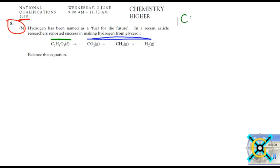So carbon, we've got 3. Hydrogen, we've got 8. And oxygen, we've got 3, 2.